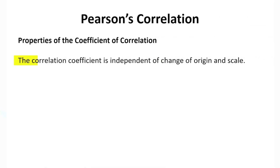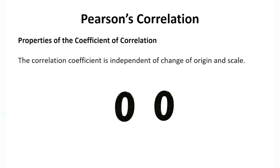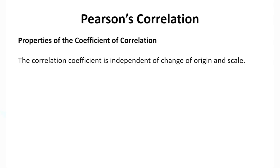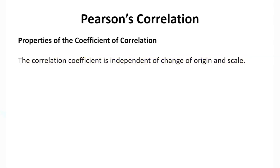Another very important property of Pearson's correlation is that it is independent of change of origin and scale. By default, the origin is assumed to be (0, 0). But even if you shift the origin to another point, and modify the values — say by multiplying or dividing by a certain factor — the correlation coefficient remains unaffected. This is a very important property of Pearson's correlation, and we'll demonstrate this in the hands-on section as well.